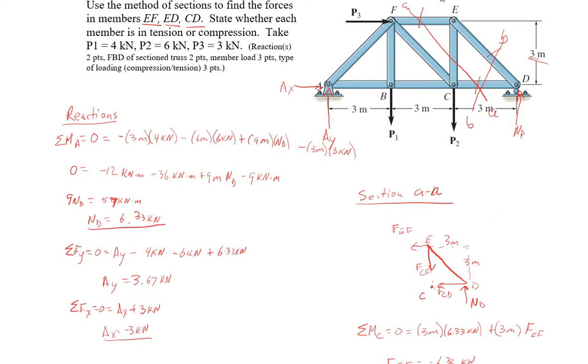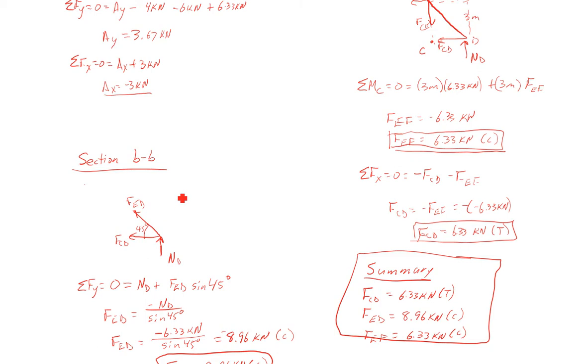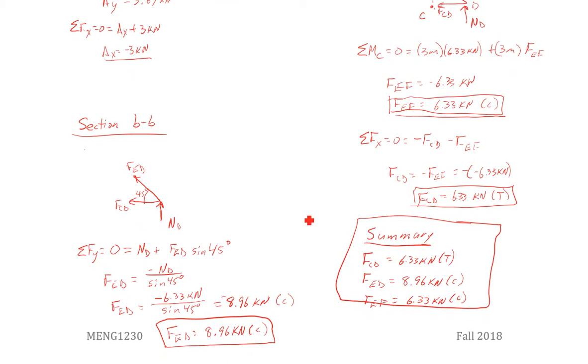And then I had my section A, that diagonal line. I drew my free body diagram for that section. Found my internal loads. Then I took another segment to find the forces in the other two members I didn't have in my initial cut. And then I summarized that.